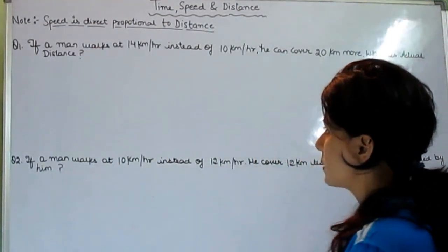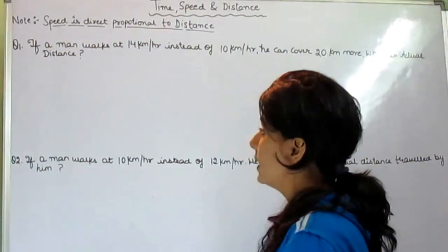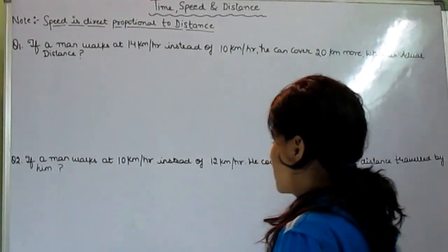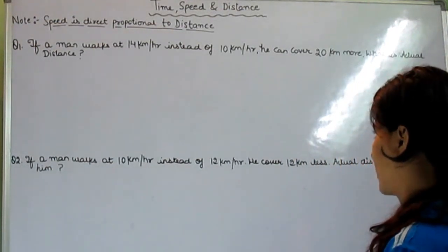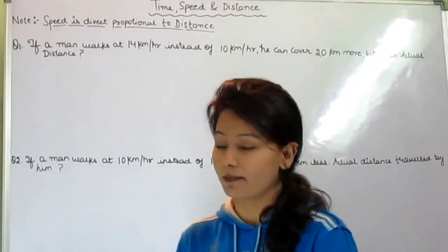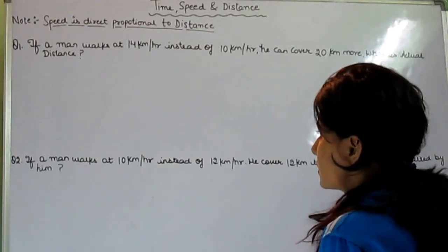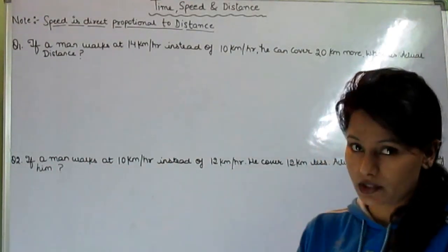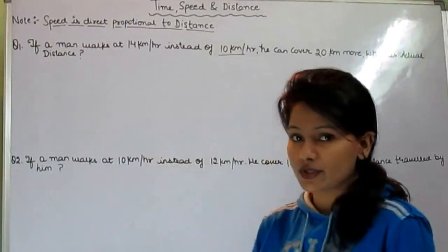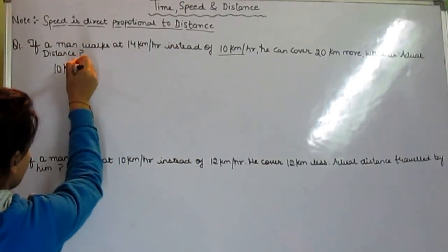First question: If a man walks at 14 km per hour instead of 10 km per hour, he covers 20 km more. What is the actual distance traveled by him? So here it is mentioned that if a man walks at the speed of 14 km per hour instead of 10 km per hour, it means his actual speed is 10 km per hour.